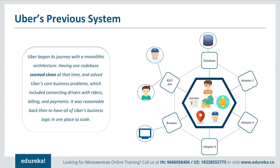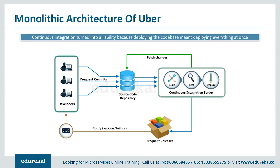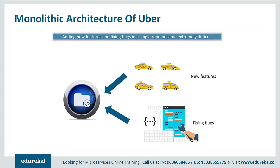There were three adapters used to perform different functionalities such as notifications, sending mails or messages, billing, and payment. Finally, a MySQL database was used to capture all their data. All features such as passenger management, billing, notification, trip management, and driver management were composed in a single framework. Having one codebase solved Uber's core business problems — connecting drivers with riders, billing, and payments. But as Uber started expanding worldwide, it continuously faced problems of scalability and continuous integration. Developers could not continuously build, test, deploy, and release software frequently, and adding new features or fixing bugs in a single repository became extremely difficult.